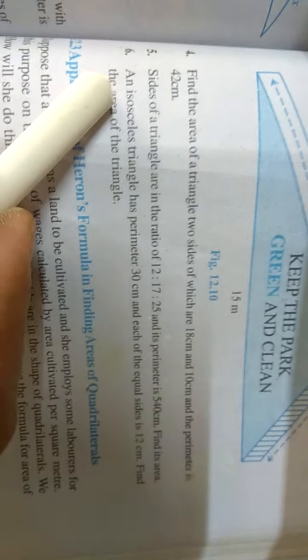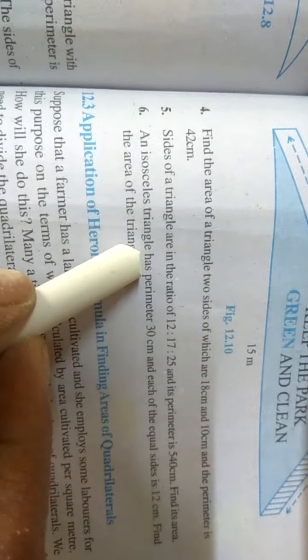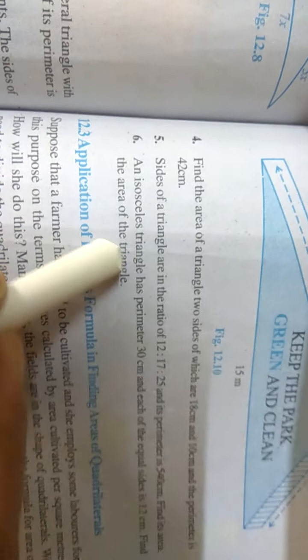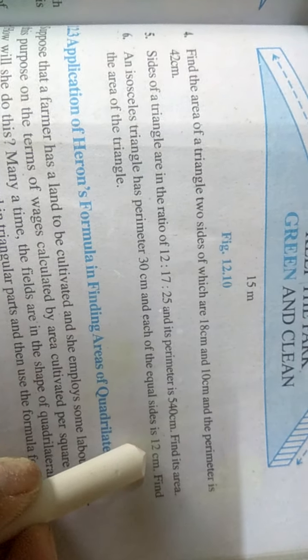Now dear students, question number 6. An isosceles triangle has perimeter 30 cm. An isosceles triangle is one whose two sides are equal. Its perimeter is 30 cm and each of the equal sides is 12 cm.